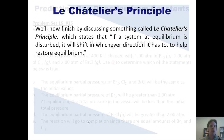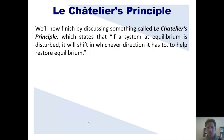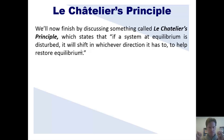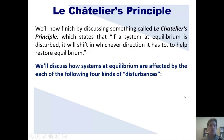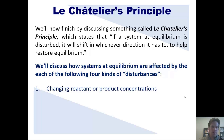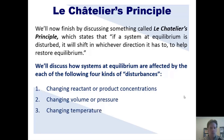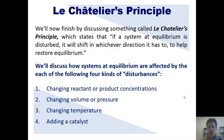I now want to turn to a different subject, that of Le Chatelier's principle. Le Chatelier's principle states that if a system at equilibrium is disturbed, it will shift in whichever direction it has to in order to restore equilibrium. Systems at equilibrium can be affected or disturbed in four different ways: by changing the reactant or product concentrations, by changing the volume or pressure, by changing temperature, and by adding a catalyst. We're now going to examine how each of these disturbs a reaction at equilibrium and how Le Chatelier's principle allows that reaction to compensate or respond to that disturbance.